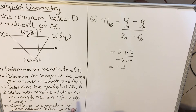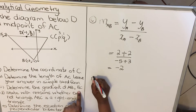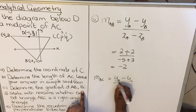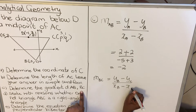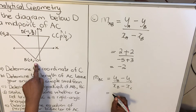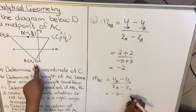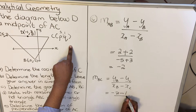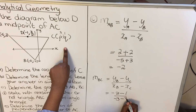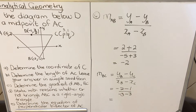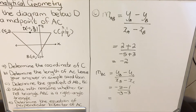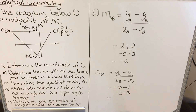Also calculate the gradient of BC: m_BC = (y_B - y_C) / (x_B - x_C). y_B = -2, y_C = 1, x_B = -3, x_C = 3. Substituting: (-2 - 1) / (-3 - 3) = -3 / -6 = 1/2.